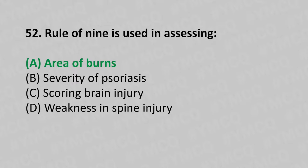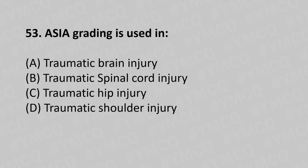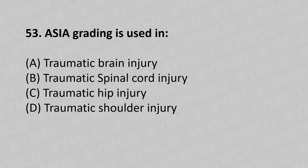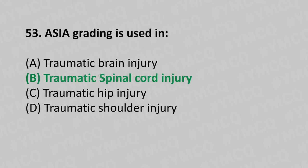Moving to our 53rd question. ASIA grading is used in: Option A, Traumatic brain injury; Option B, Traumatic spinal cord injury; Option C, Traumatic hip injury; Option D, Traumatic shoulder injury. And the answer is Option B, Traumatic spinal cord injury.